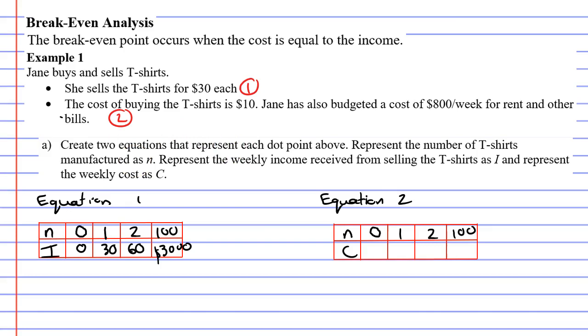Let's now look at equation two, which is talking about cost. It costs me $10 per t-shirt made. Now, if I don't make any t-shirts, I still get charged the $800 for rent and other bills. So we'll start there. We've got a cost of $800.